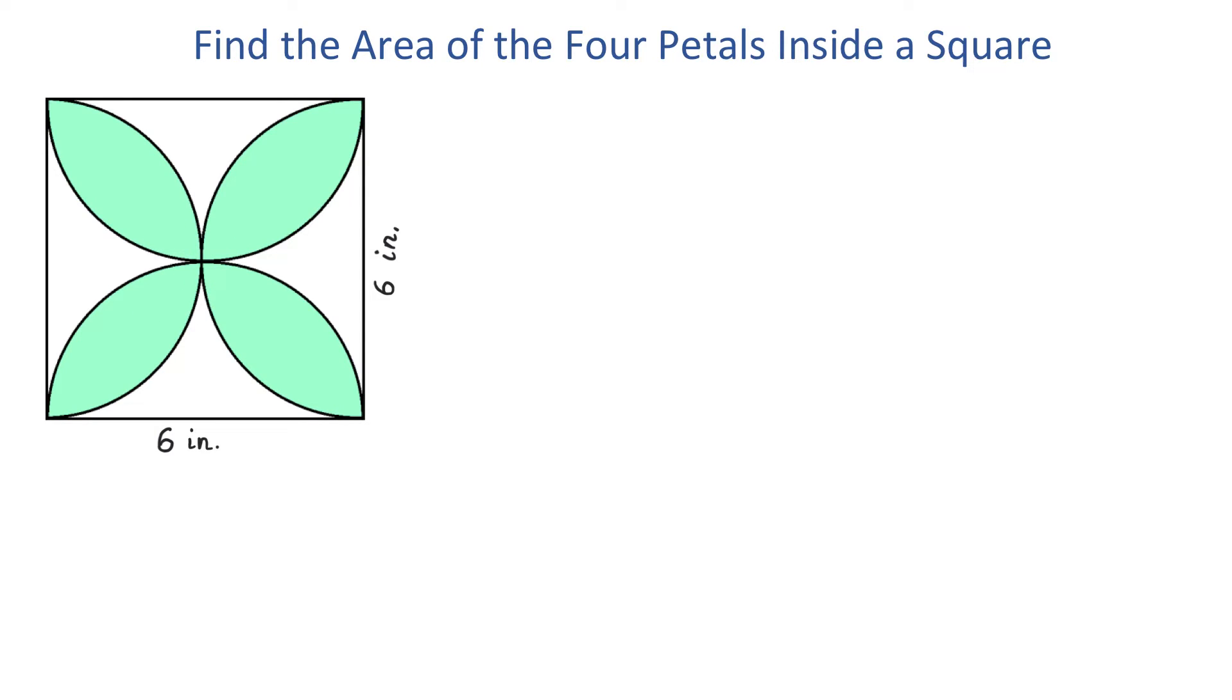If we could find the area of these 4 white regions, then we would subtract it from the area of the square and we would get the area of these 4 petals.